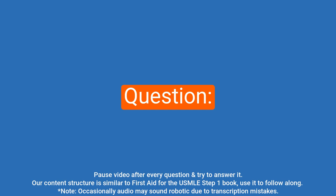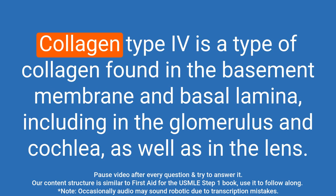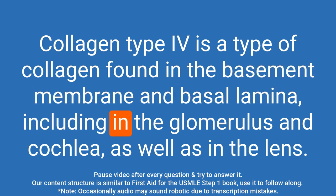This is USMLE QA — USMLE material presented in a question and answer format structured similar to the First Aid for the USMLE Step 1 book. Question: What is collagen type IV? Answer: Collagen type IV is a type of collagen found in the basement membrane and basal lamina, including in the glomerulus and cochlea, as well as in the lens.